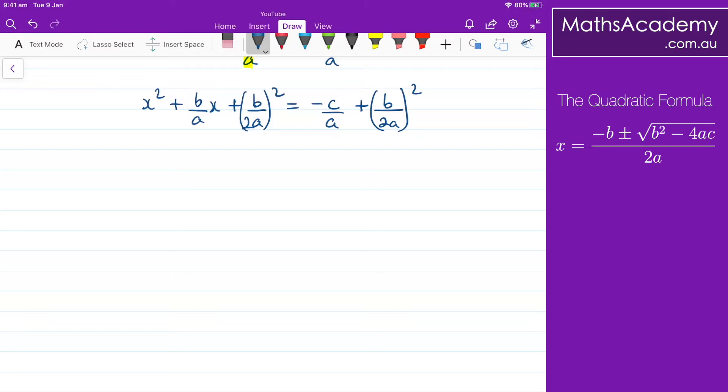So now what I can do I can write this left hand side as (x + b/2a)² which is equal to -c/a. I'm going to go ahead and square out these brackets here to give b²/4a².